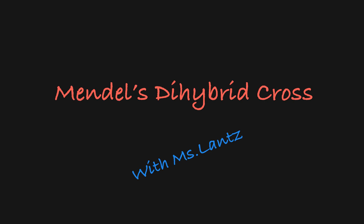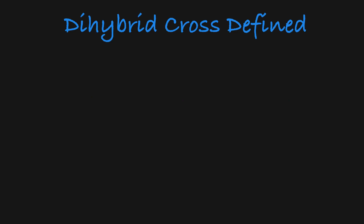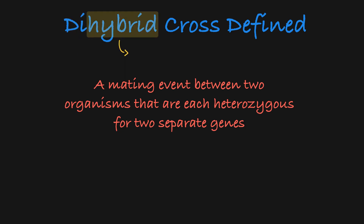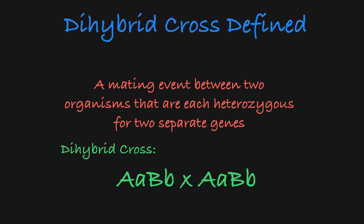In this video, I will explain Gregor Mendel's dihybrid cross. A dihybrid cross is a mating event between two organisms that are heterozygous for two separate genes. 'Di,' meaning two, refers to the fact that we are looking at two genes, and 'hybrid,' meaning mix, refers to the heterozygous genotype. So our parent genotypes in this cross are both heterozygous for two genes.